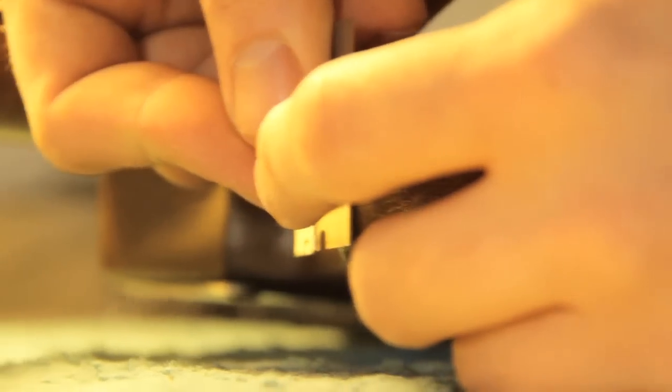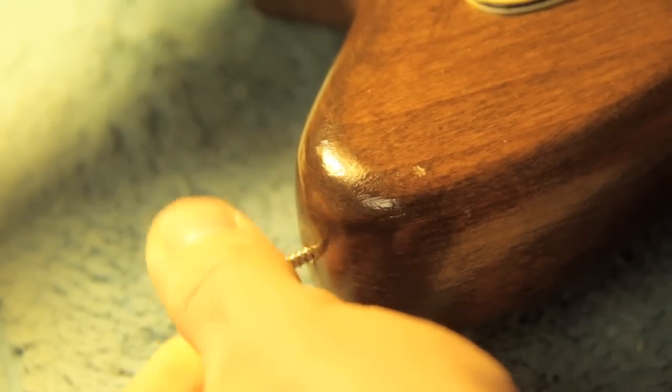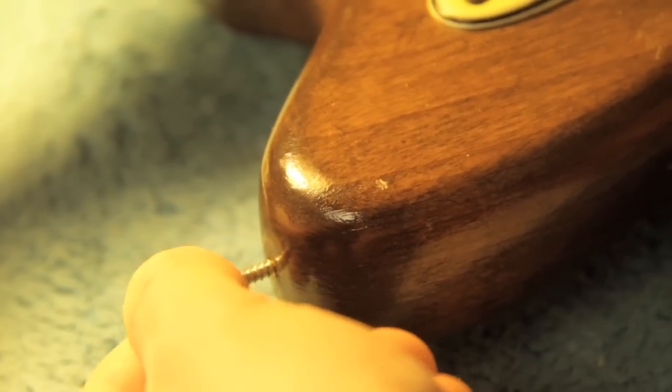After it's dried, you can just cut off and then check the screw by hand. You should be able to twist it in a little bit before you start to feel some force.